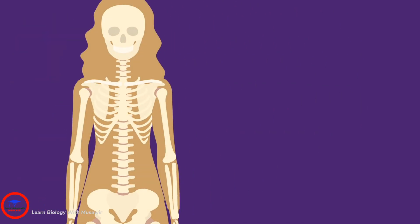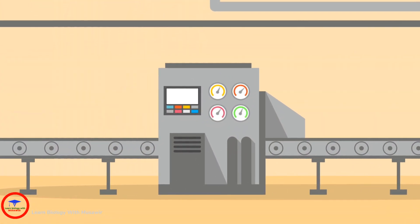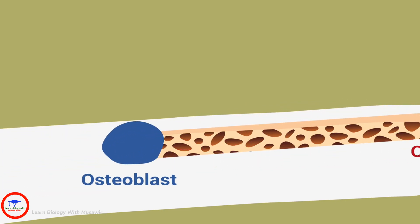Osteoporosis is a disease that makes your bones thin and weak. Normally, your body's constantly replacing old bone tissue with new bone tissue, which is made of calcium and collagen. Osteoporosis happens when your body removes old bone too quickly or doesn't make new bone fast enough.